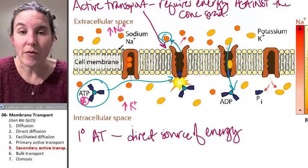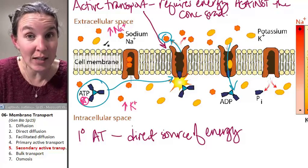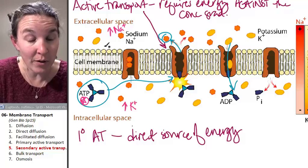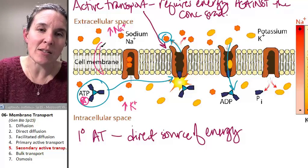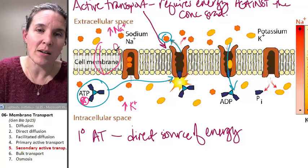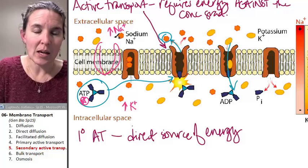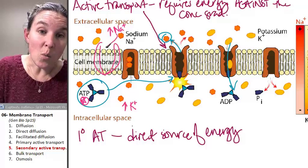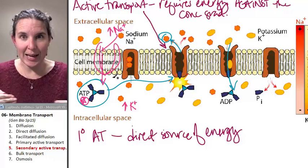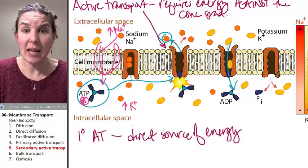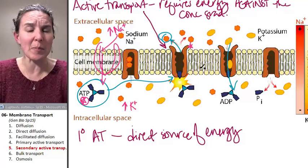So if we had a transporter, a secondary active transport transporter. Sodium is going to want to come in and go through. It wants back into the cell because this guy, the sodium potassium pump, is pumping it out, using ATP to pump it out.